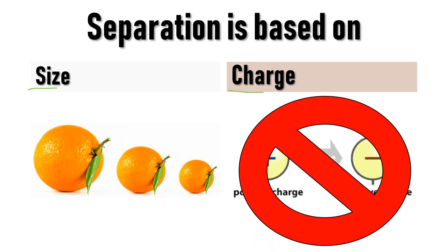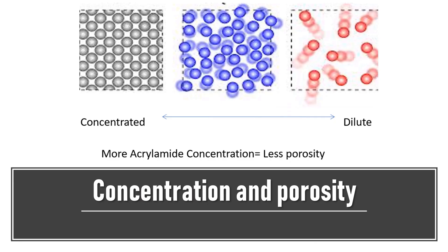The movement will be based only on the size of the protein. The concentration of the gel depends upon the amount of acrylamide added in the buffer. If more acrylamide molecules are present, there is less space between the molecules, and when fewer acrylamide molecules are present, there is more space. Thus the pore size of the gel depends upon the concentration of acrylamide being used.